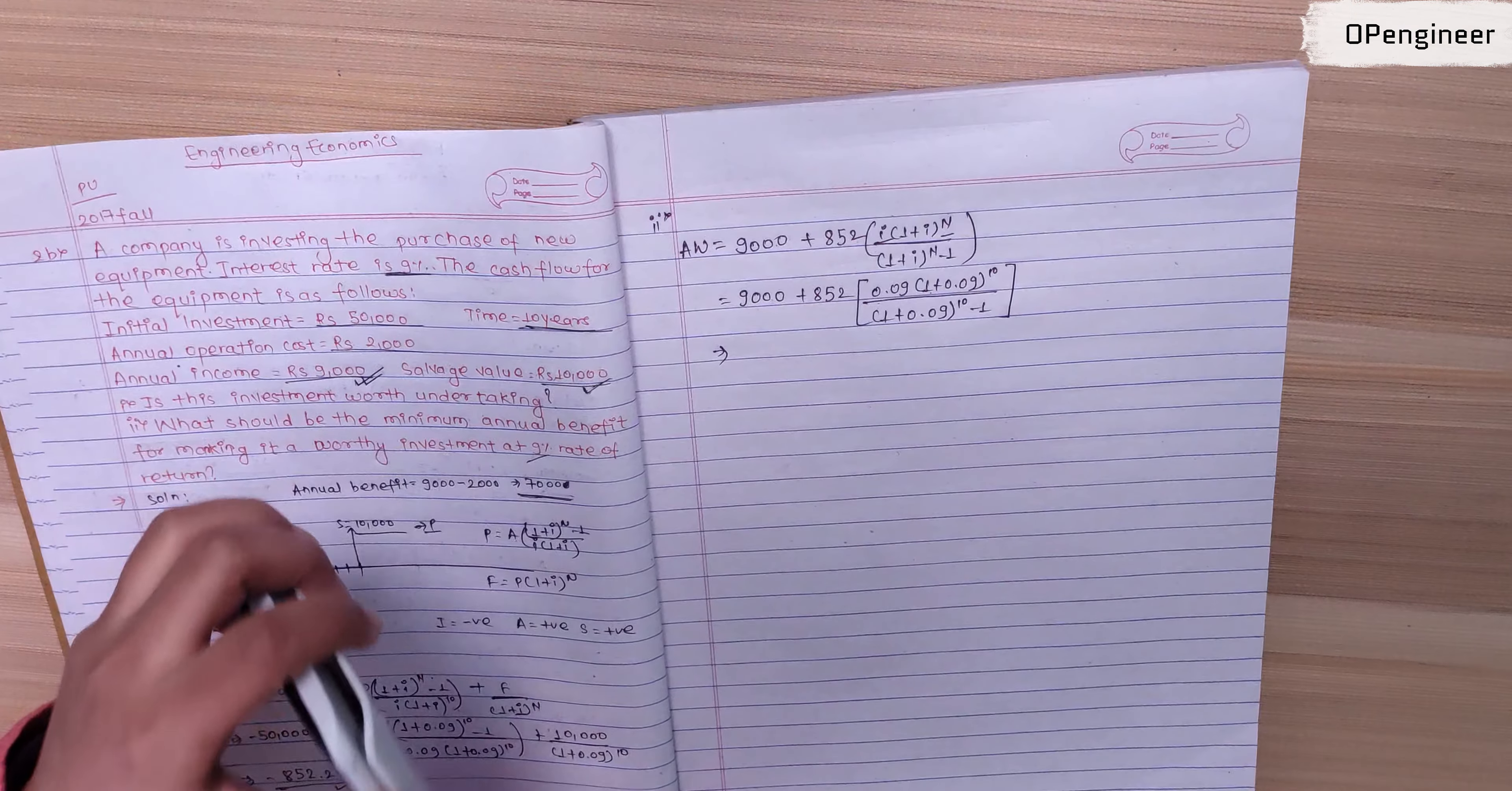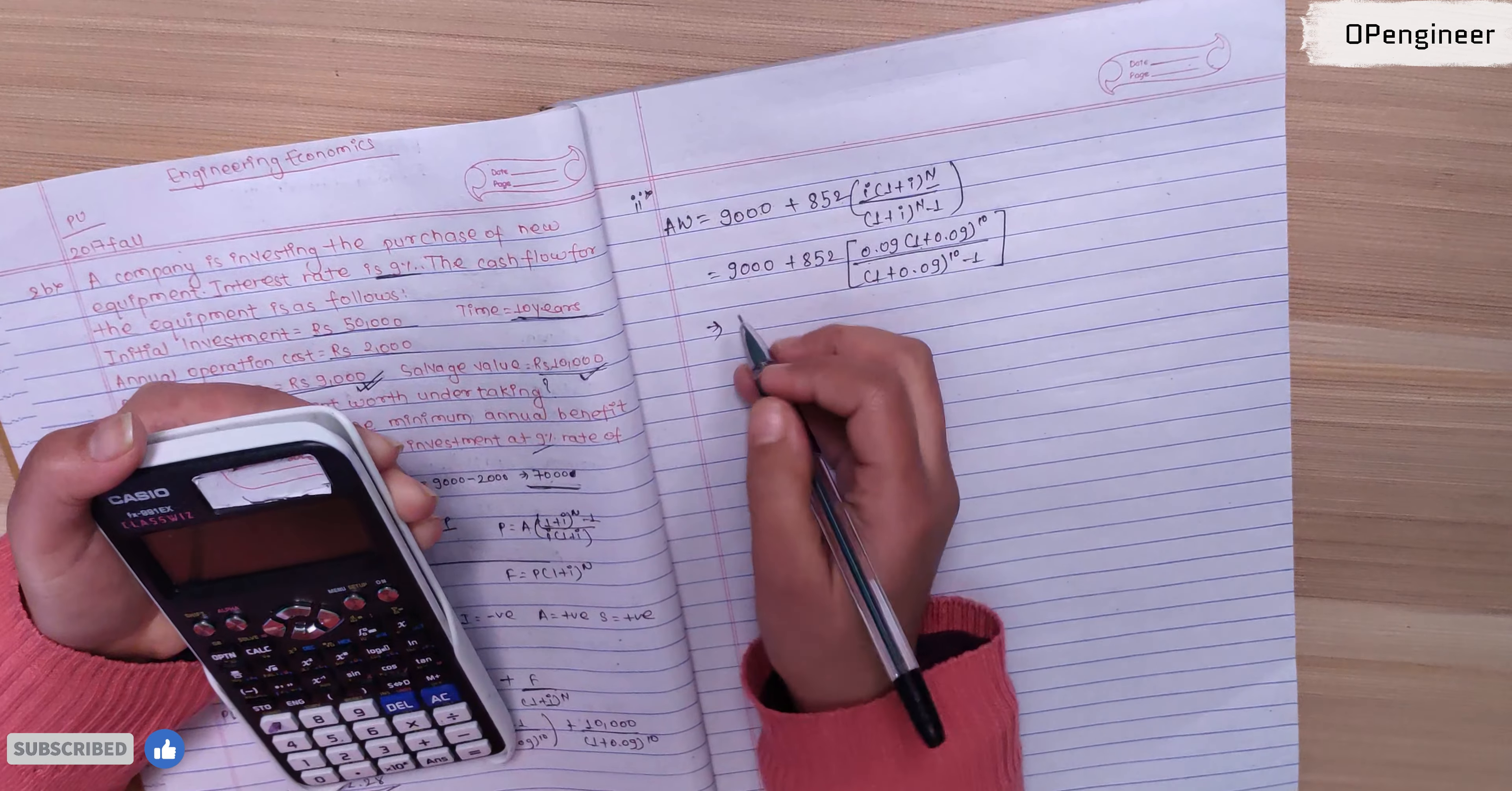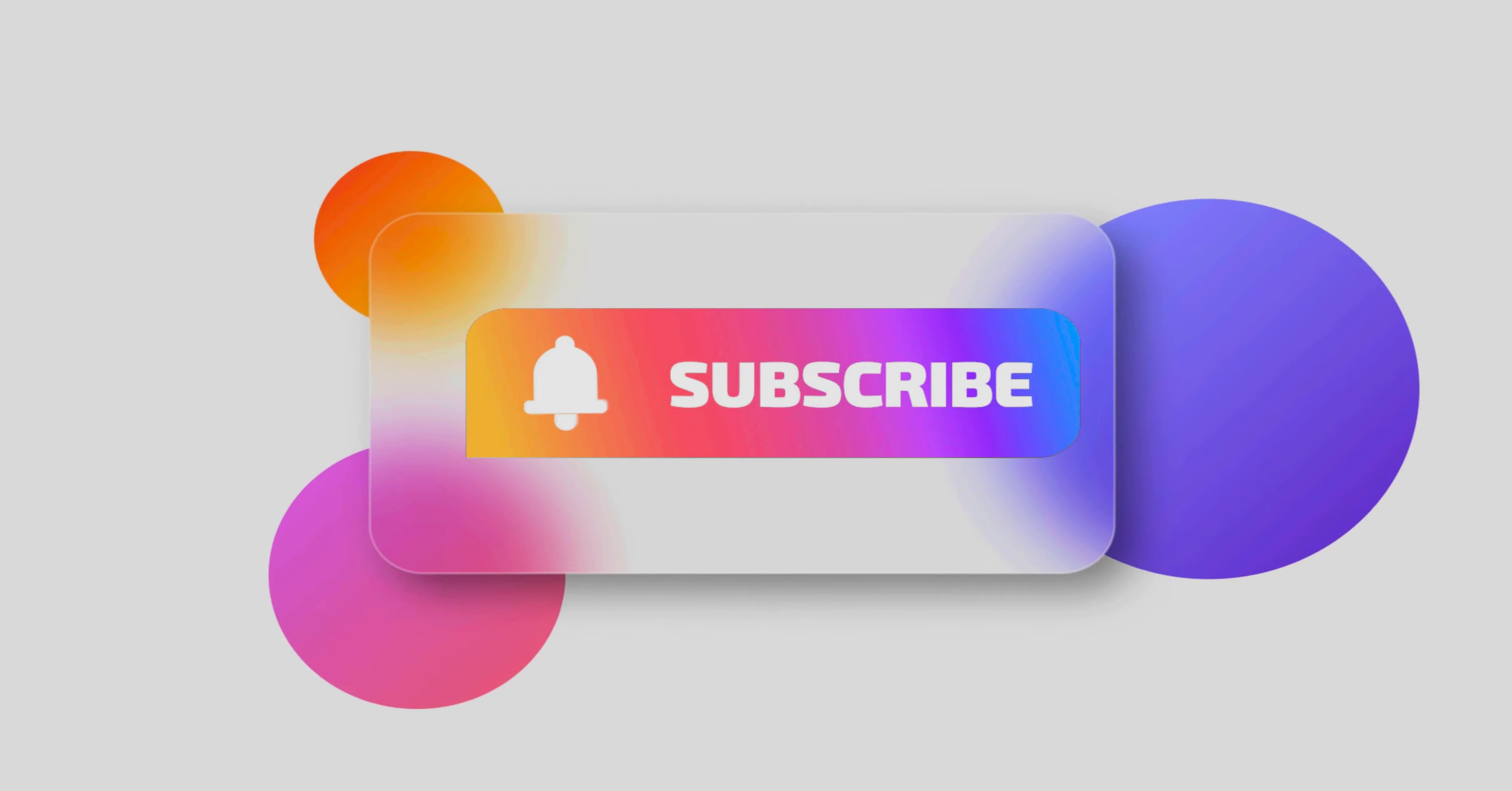Calculating this gives 9,132.758. So the minimum annual benefit is 9,132. This means the annual income should be 9,132 to make the investment worthy. Thank you. If you have any confusion please comment, and like and subscribe to the channel. Thank you.